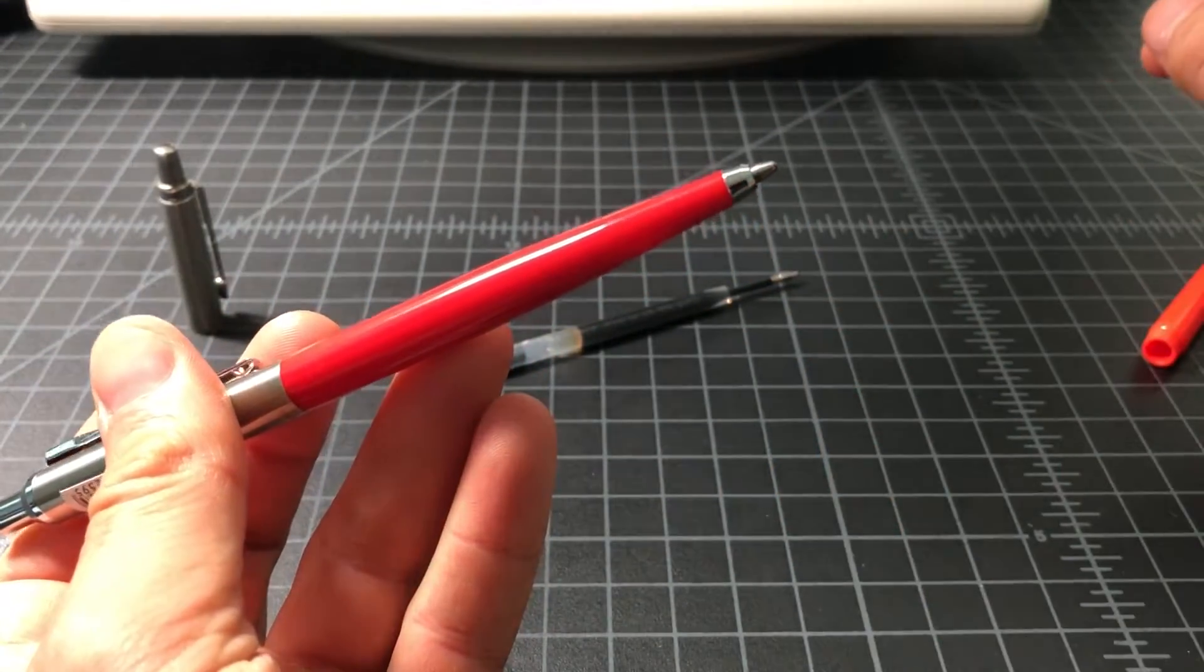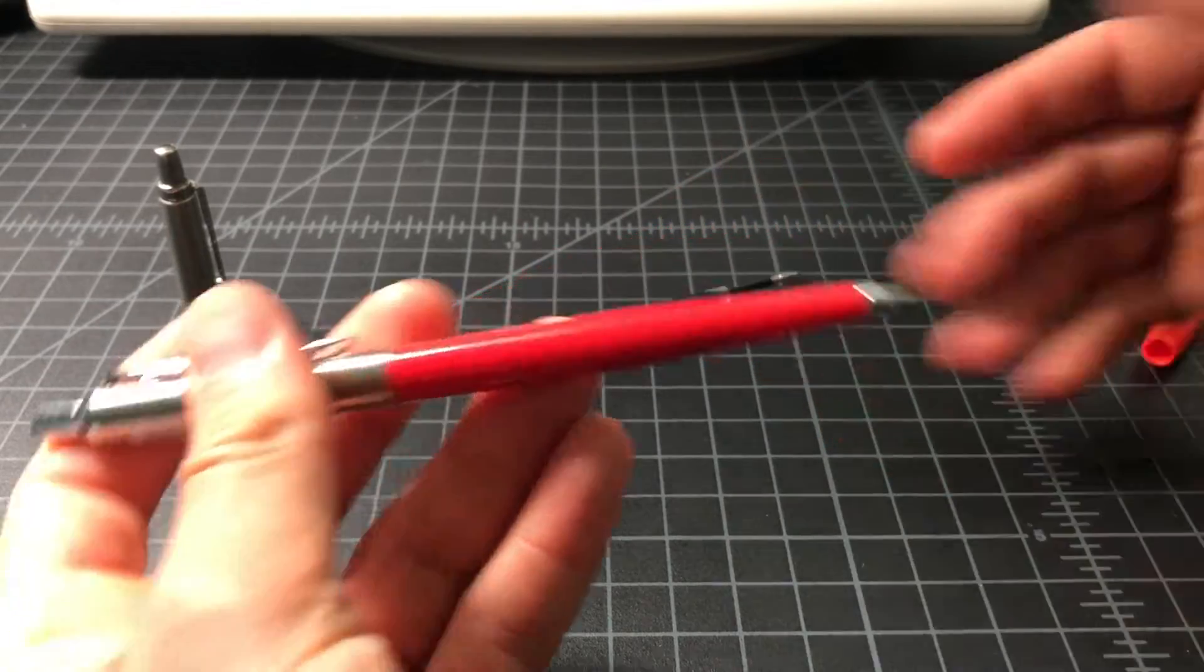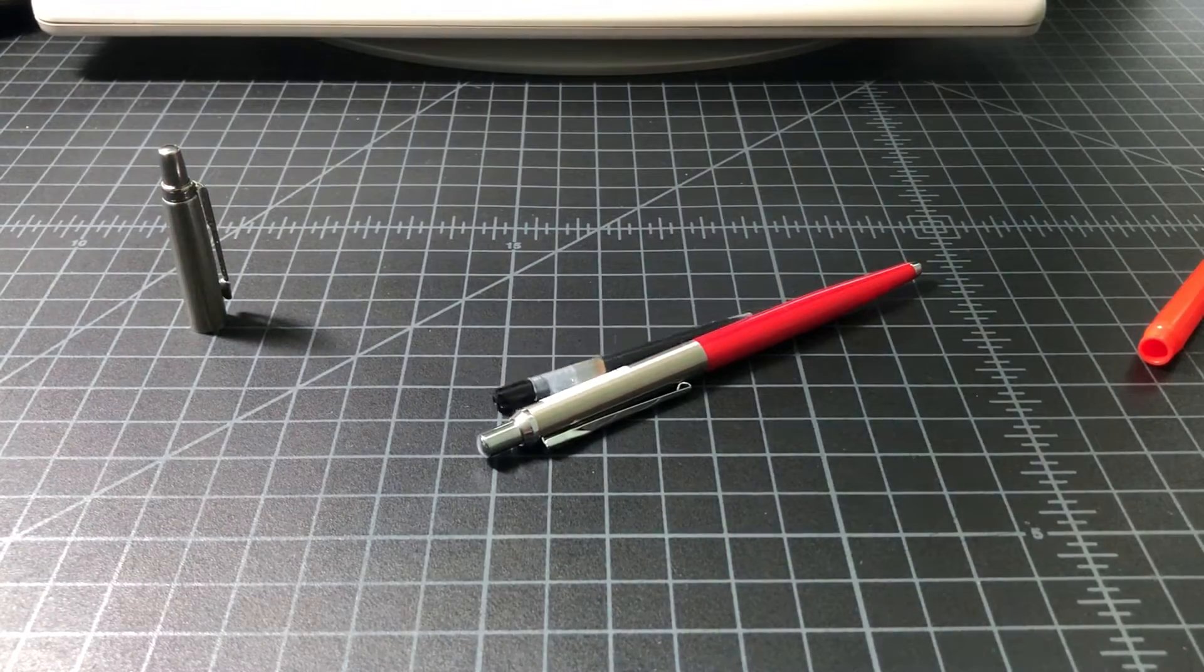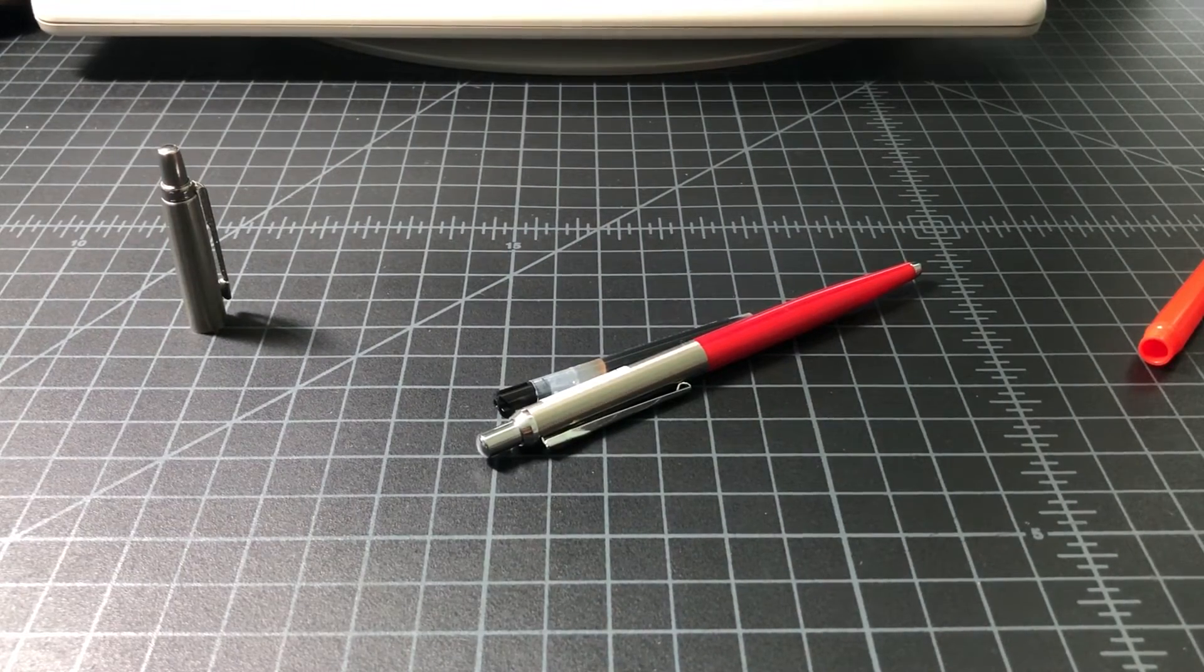Reasonable length of the ink outside of the pen, and it works. So there you go - Ohto Raise flash dry gel with a G2 cartridge. Thanks for watching.